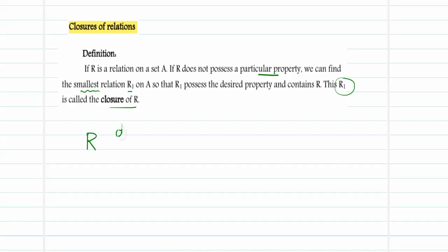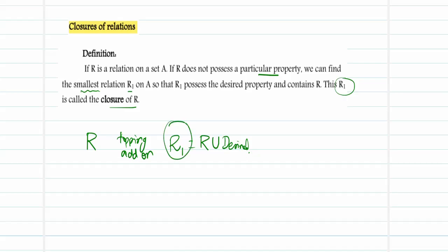So what do we do? We do a topping on top of it. This topping gives us a new relation — R1 — which is the old relation R combined with the desired property we want. This new relation we get is called a closure.